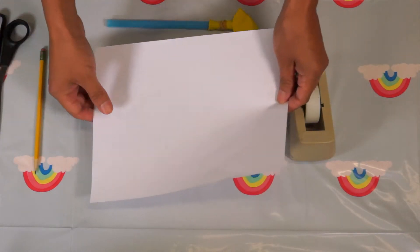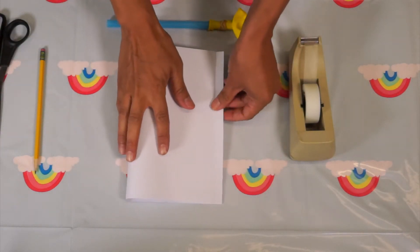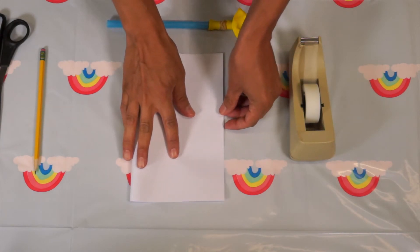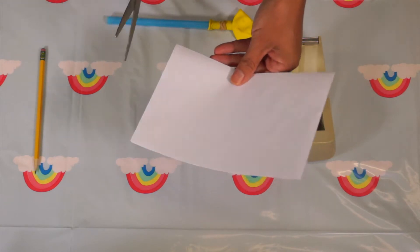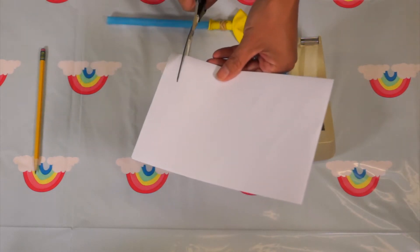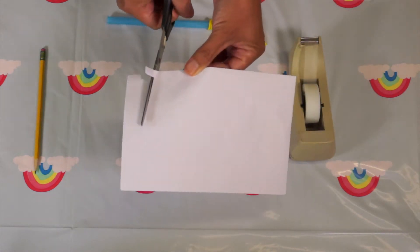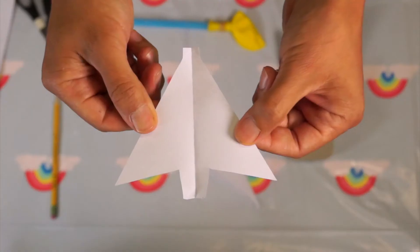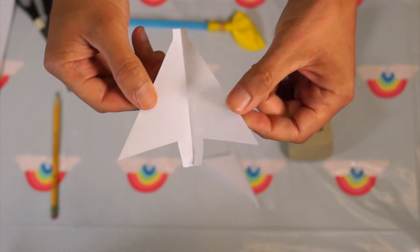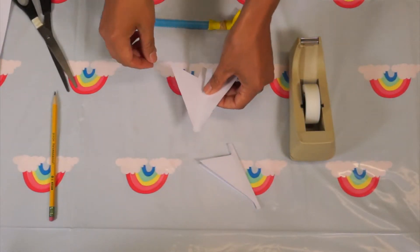You're going to grab a white sheet of paper and fold the paper in half. Once you have it folded in half, you're going to cut your fins. Once you cut them out, you can go ahead and color them.